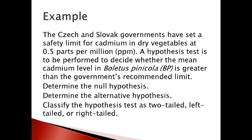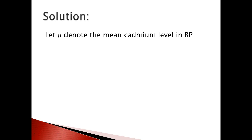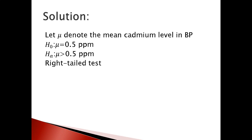Find the null hypothesis, alternative hypothesis, and classify the hypothesis test. For the null hypothesis, it uses the equality sign. The Czech and Slovak governments set the safety limit at 0.5 ppm. If we denote μ as the mean cadmium level, the null hypothesis is: H₀ such that μ = 0.5 ppm. Since we are talking about 'greater than,' the alternative hypothesis is: Hₐ such that μ > 0.5 ppm. The greater-than sign means this is a right-tail test.